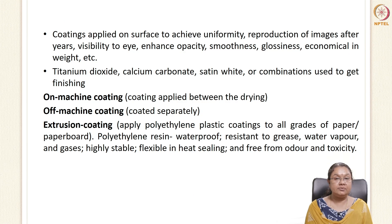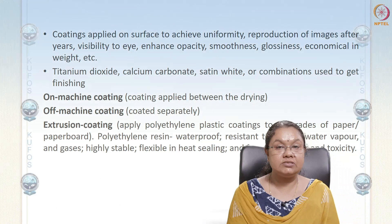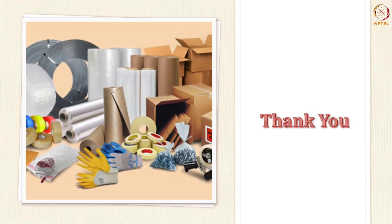With this we have come to the end of the paper manufacturing process. In previous sessions we saw how pulp is developed from wood, the different types of wood, different pulping methods, stock preparation, bleaching, machinery at each step, and finishing methods. Thank you.